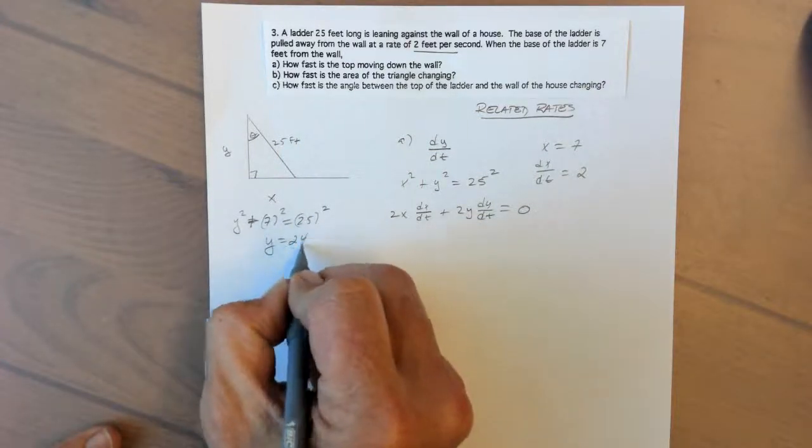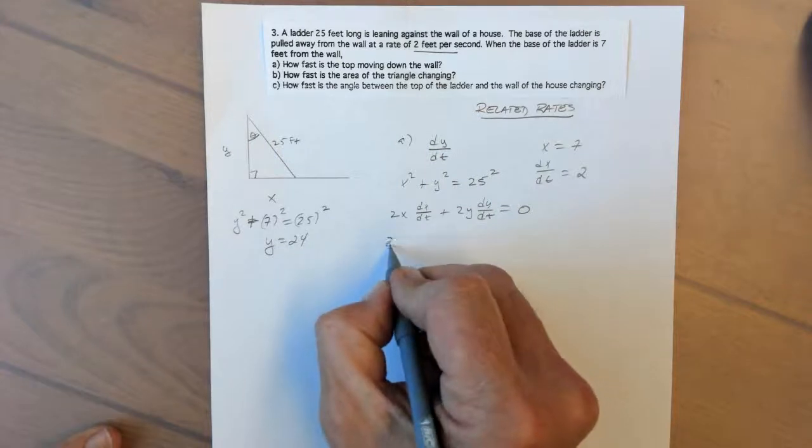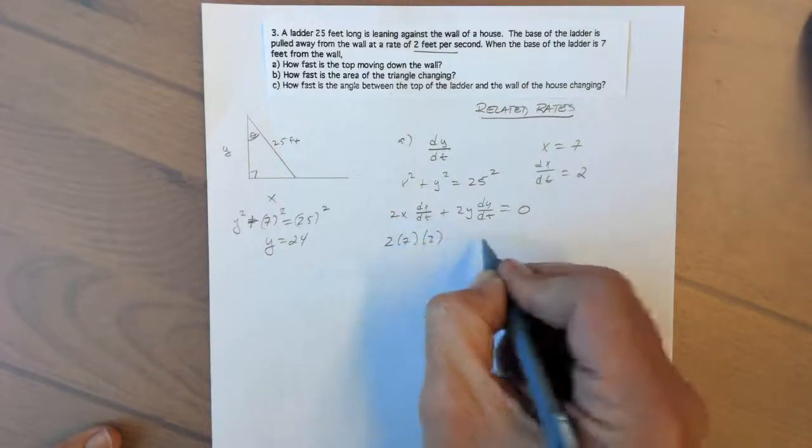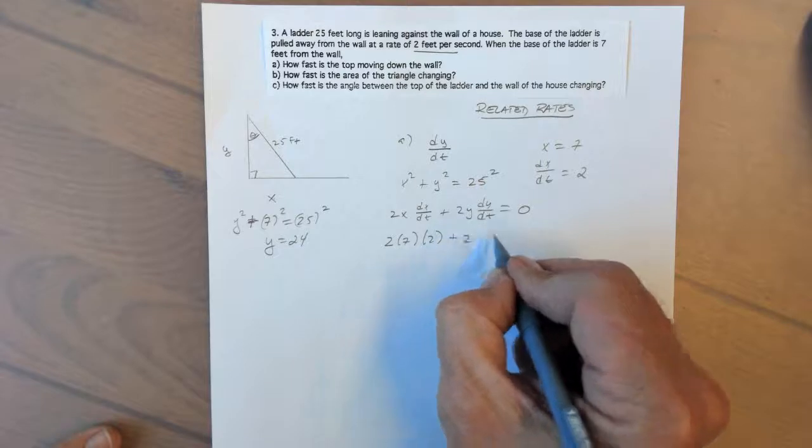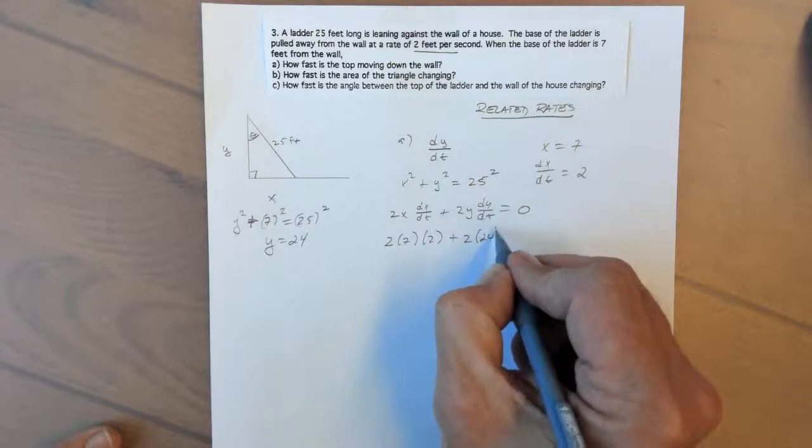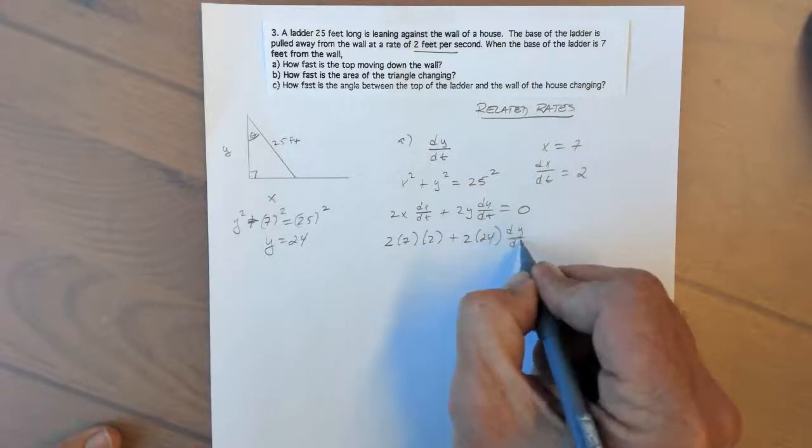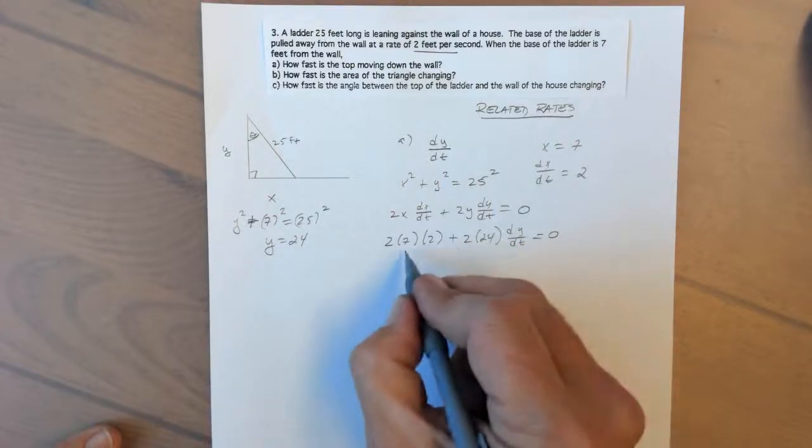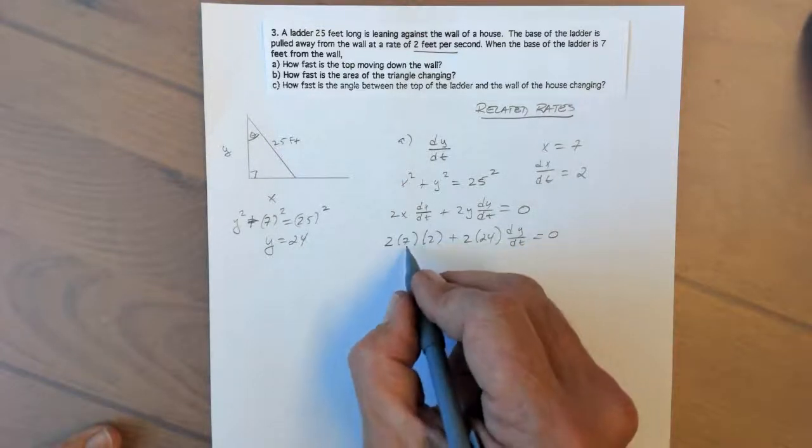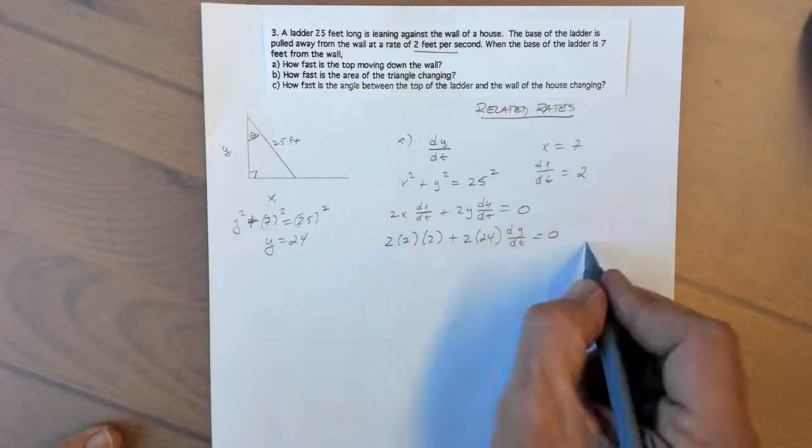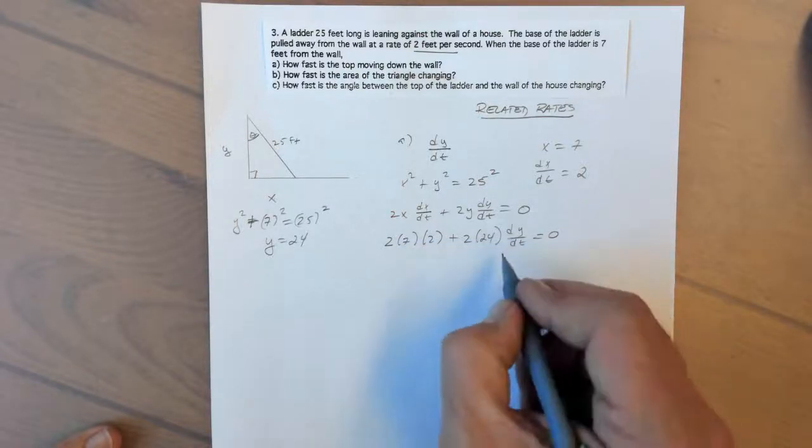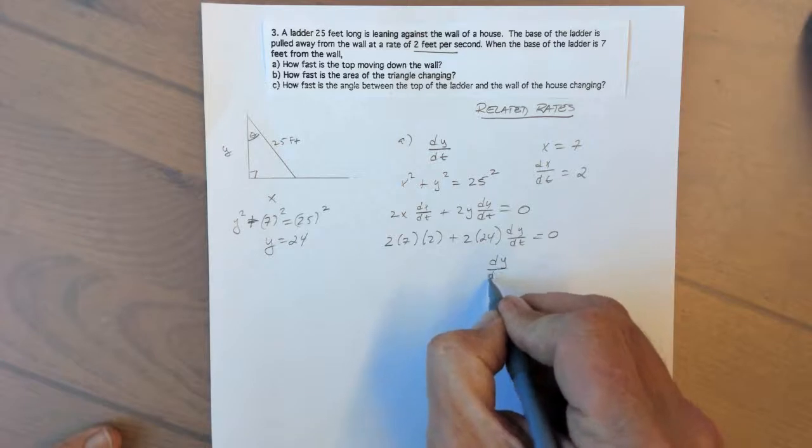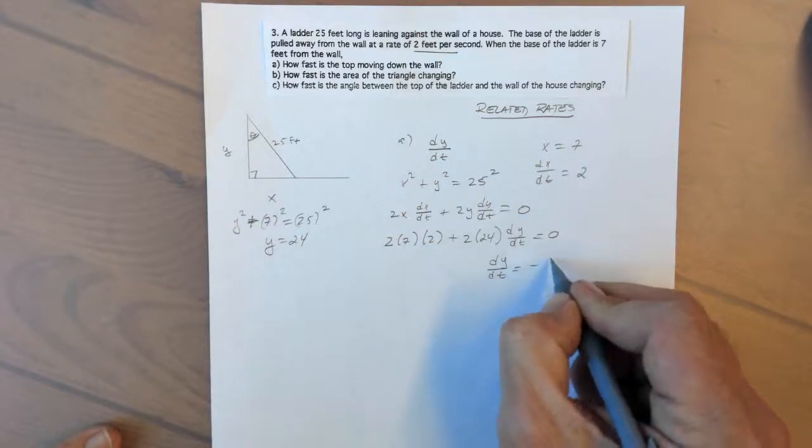So we have 2 times 7 times dx/dt, which is 2, plus 2 times y, which is 24, times dy/dt equals 0. And 2 times 2 is 4, that's 28, subtract, divide by the 48, and dy/dt would be negative 7/12, and our units would be feet per second.